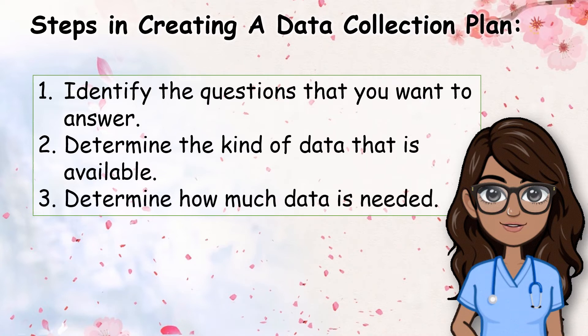Step three is to determine how much data is needed. We want to get enough data so that we can see patterns and trends. For each data element on the list, write down how much data is needed. You may refer to the effective sample size discussed in the previous lessons.